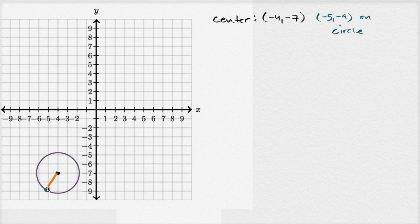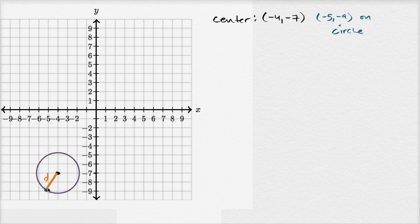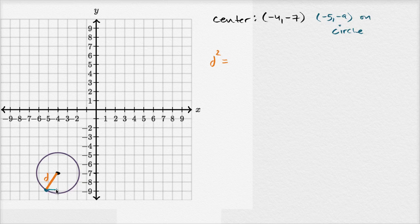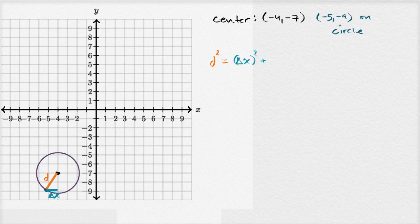The distance squared, if the length of that is the distance, we could say the distance squared is going to be equal to our change in x squared, so that right there is our change in x, our change in x squared, plus our change in y squared.